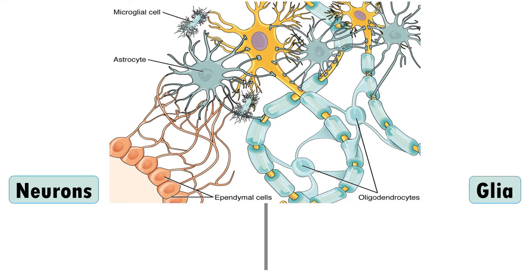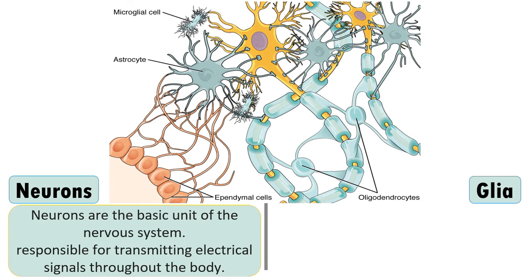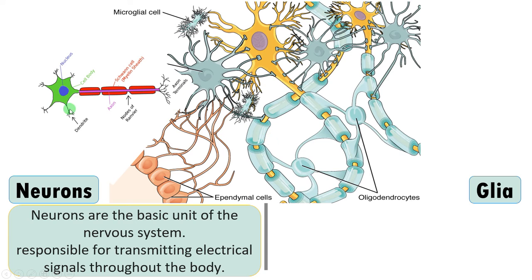Hi friends, in this video let us understand the difference between neurons and glial cells. Neurons are the basic functional unit of the nervous system, responsible for transmitting electrical impulses throughout the body. This is an individual neuron made up of a cell body, dendrites, and axon.